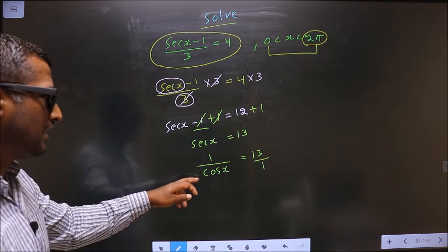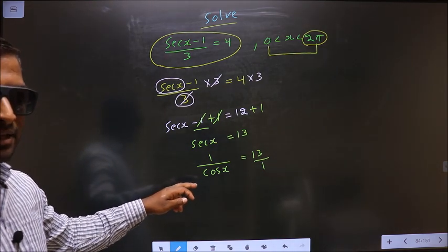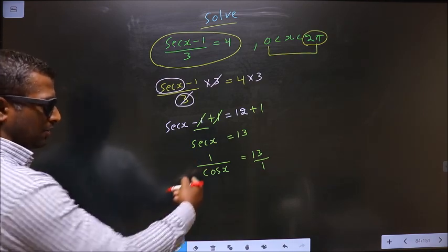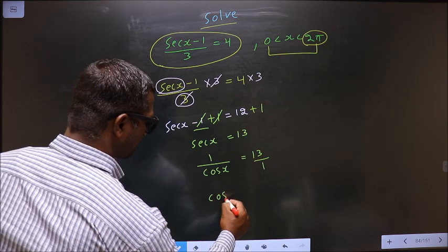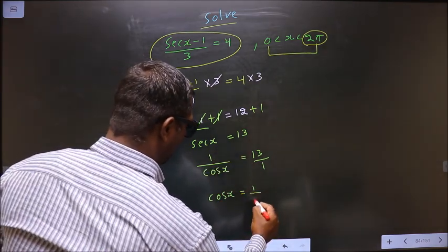Now cos x should be the subject. For that to happen, I should do reciprocal on both sides. When I do the reciprocal, I get cos x equal to 1 by 13.